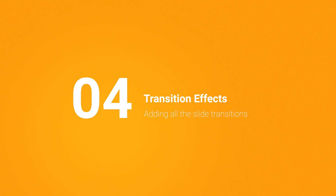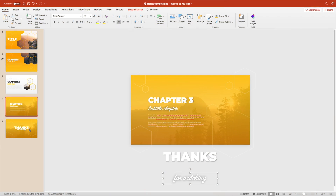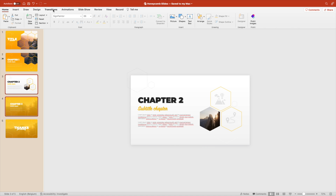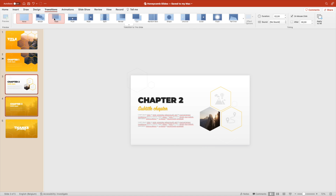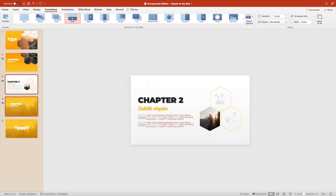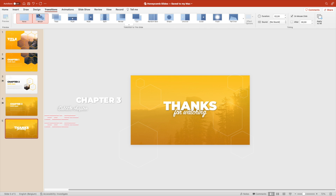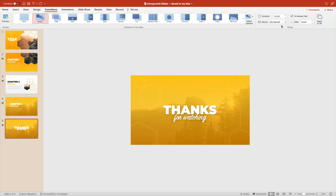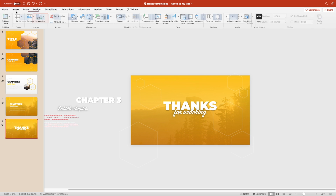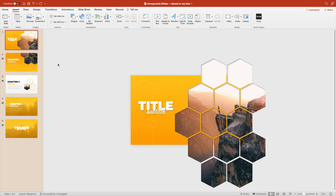As a final step, add all the slide transitions. On the first slides, add the push transition, similar to the second slide, and set it to two seconds so it doesn't happen too fast. On the last slide, add the morph transition, also at two seconds. Now let's preview the result.